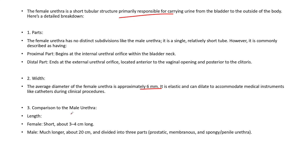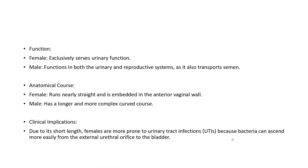The male urethra is about 20 centimeters and has several parts: the prostatic, membranous, and spongy or penile urethra. So those are the types or subdivisions of the male urethra.